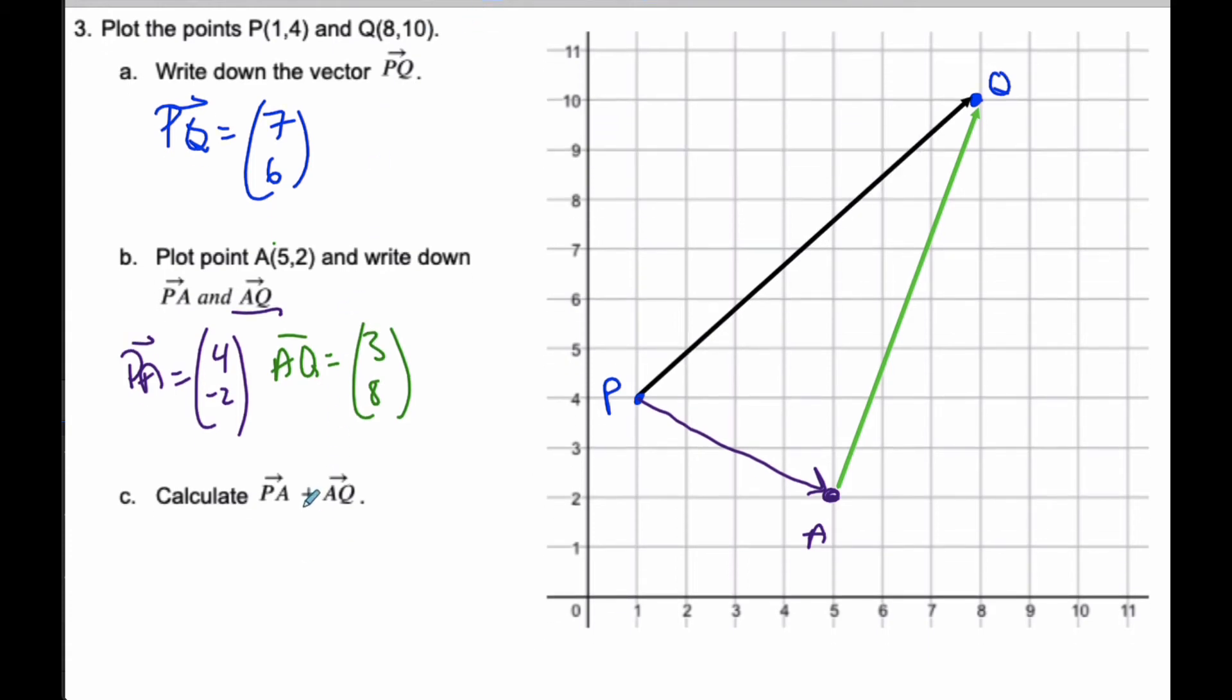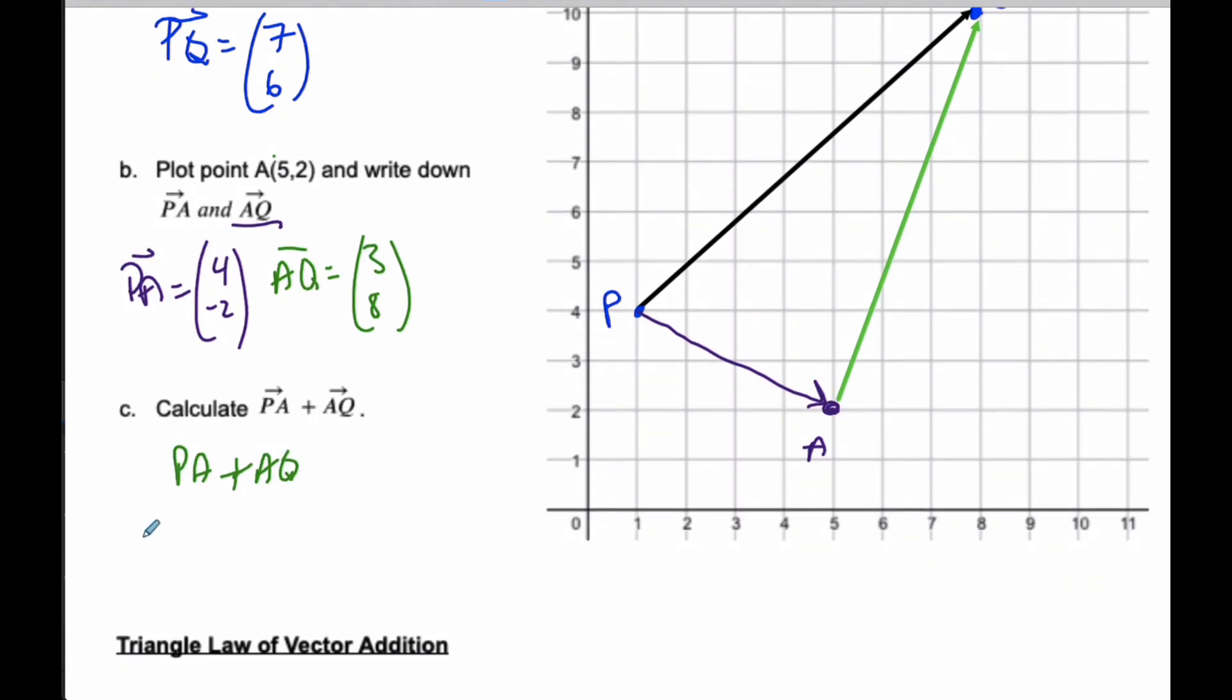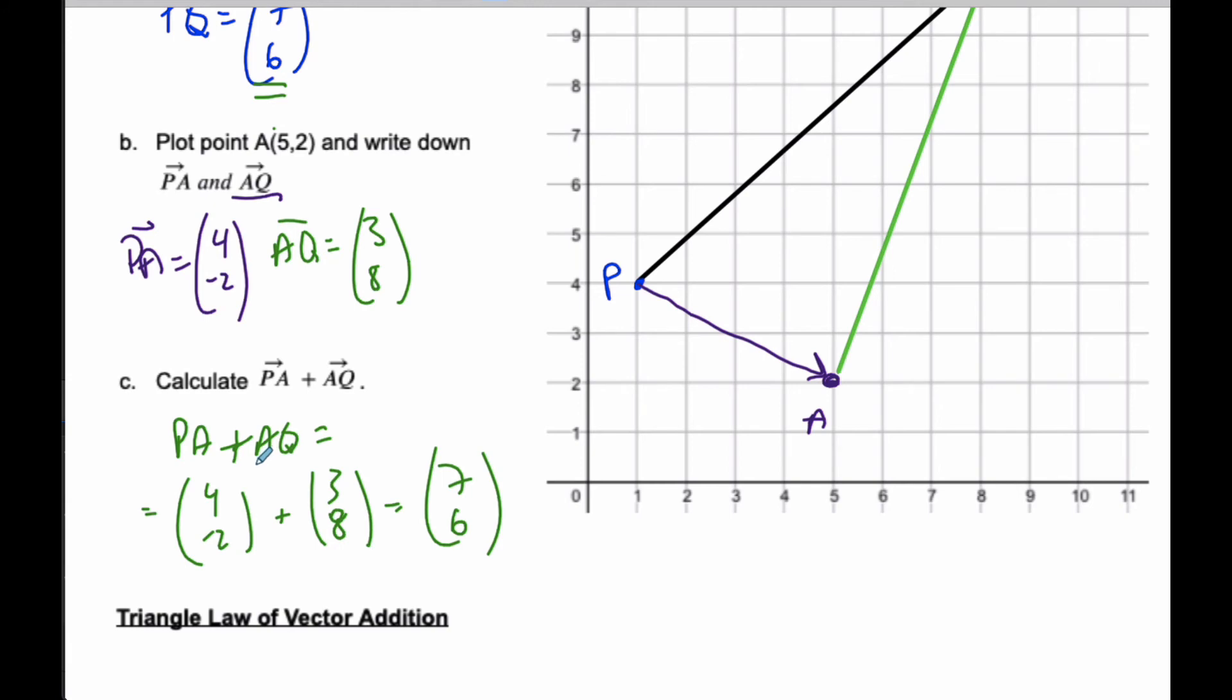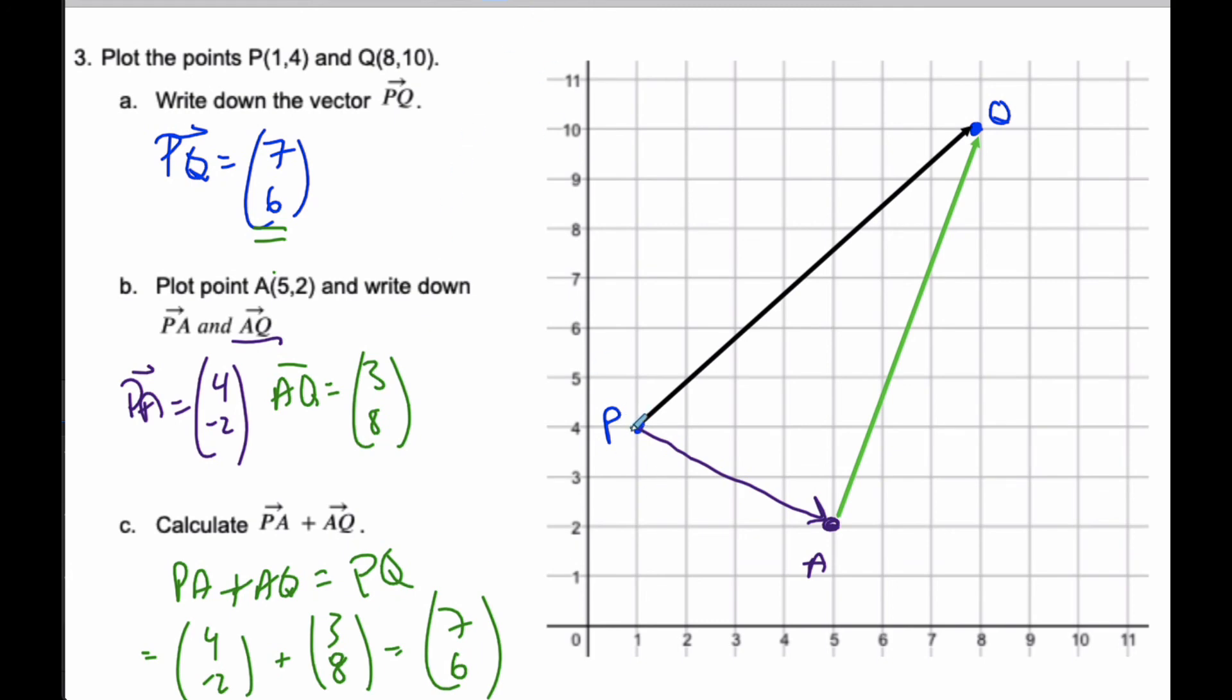So now, what I can see is if I go PA plus AQ, I know that that is (4,-2) plus (3,8), which is (7,6). If I look here, 7 and 6 was the same as PQ. So PA plus AQ is the same as PQ. And if I look at this diagram here, it illustrates if I start at P, and if I go to A, and then A to Q, that is the same result as just going straight from P to Q.